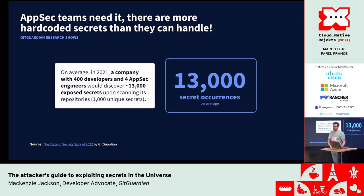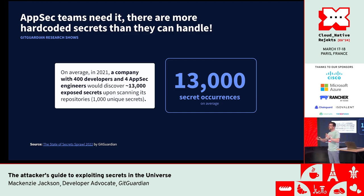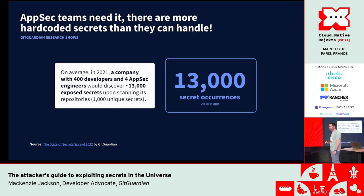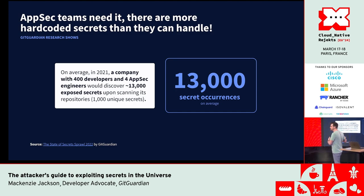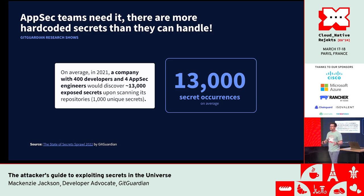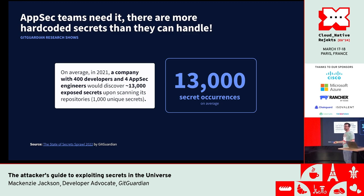We do secret detection internally with companies. If we take an average company with 400 developers, we will typically find 13,000 secrets, 1,000 of which will be unique. That same company might have four AppSec engineers trying to investigate 13,000 secret incidents — who leaked it, what does it give access to, will I break production if I revoke this? It's really an impossible situation, so you do the next best thing: ignore the problem and hope it goes away magically.